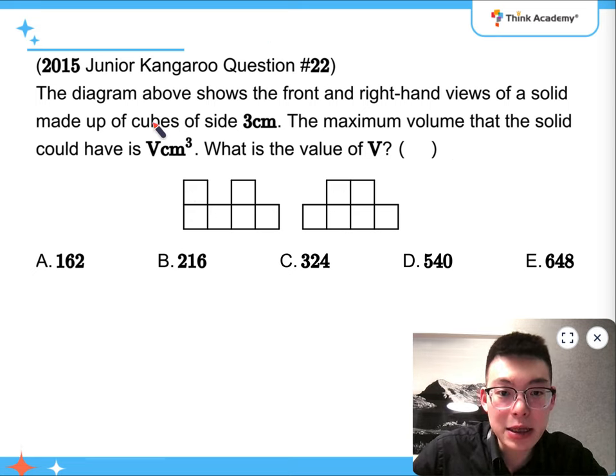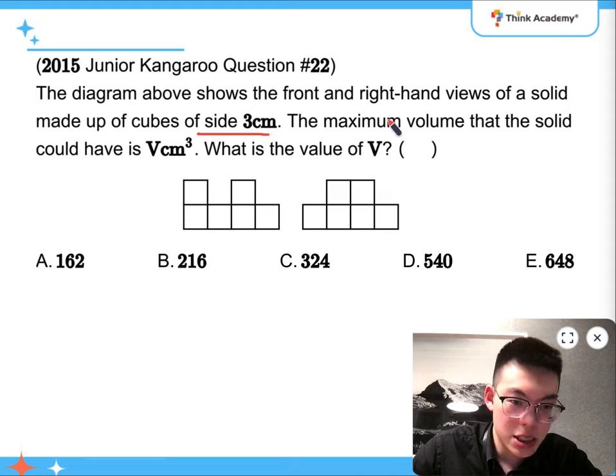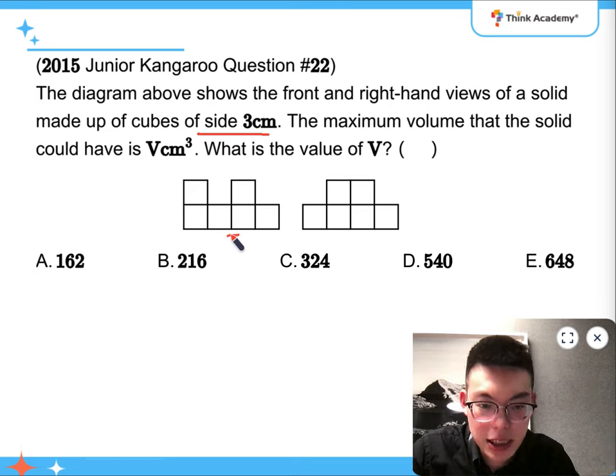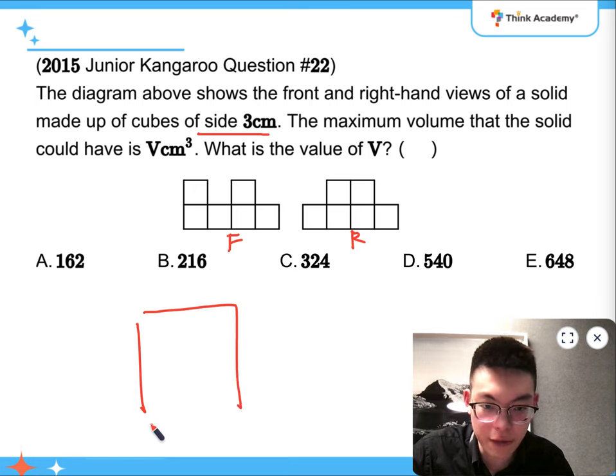And then for the second question, the diagram shows the front and right views of a solid that is made up of cubes of side 3 cm. What is the maximum volume that it could have?